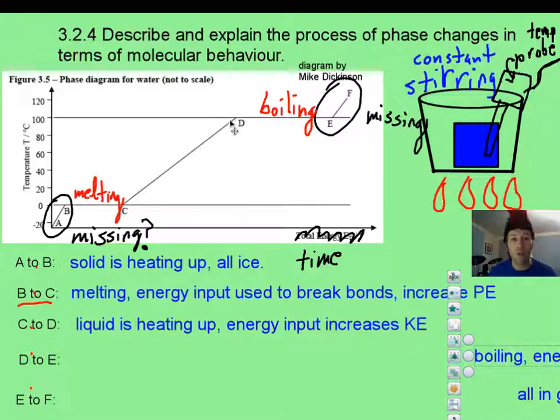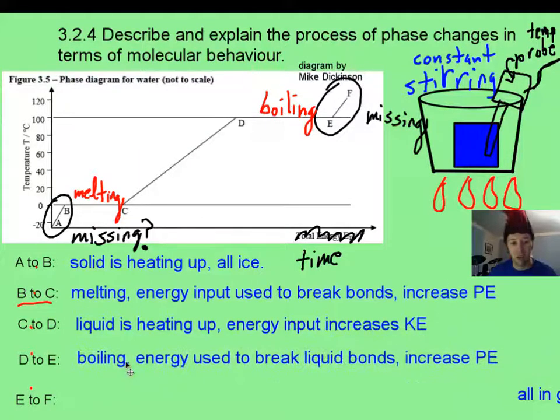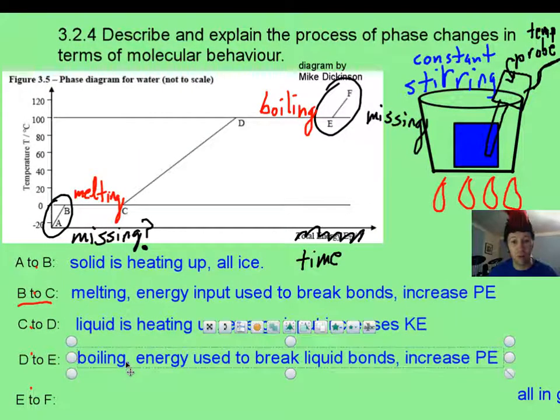Now once it gets up to 100 Celsius, only then should it start boiling, and now the extra energy is breaking liquid bonds and making molecules fly off at crazy rates into a gaseous phase, and you're increasing the potential energy, no longer a temperature increase. And that water will always, always, always stay 100 degrees Celsius until it's all completely gone.